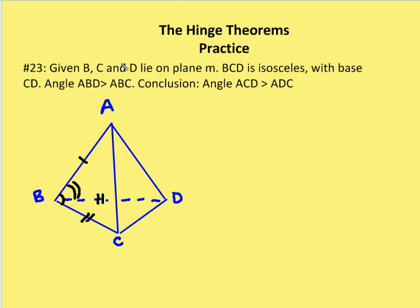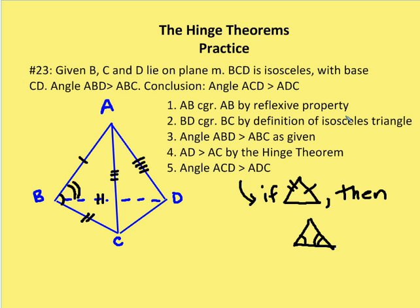Moving on to number 23: given B, C, and D lie in plane M, BCD is isosceles with base CD, and angle ABD is larger than ABC. I'm going to conclude that angle ACD is larger than ADC. Again, I tell my students: start marking up the diagram, see what you can figure out, and then go from there.